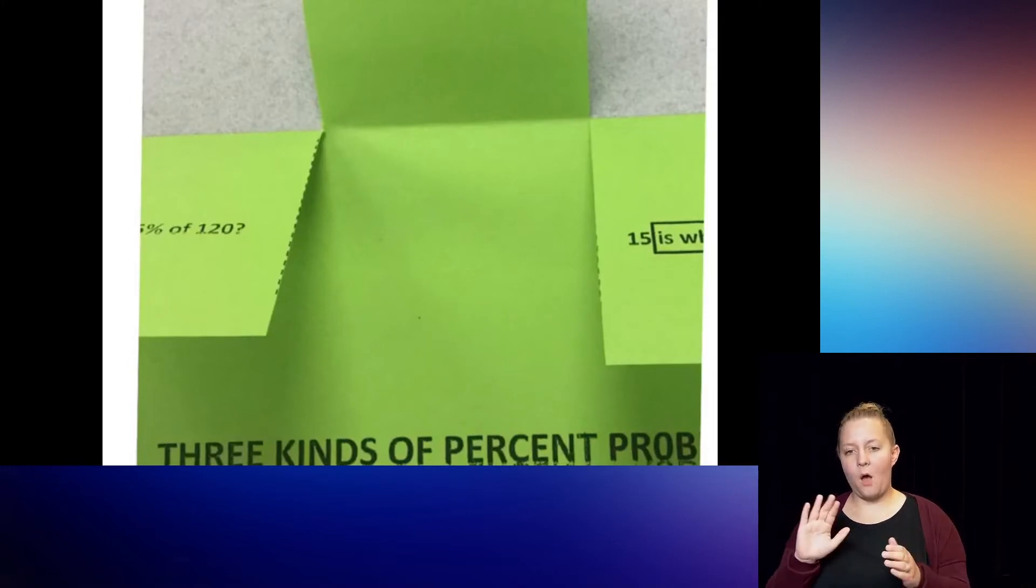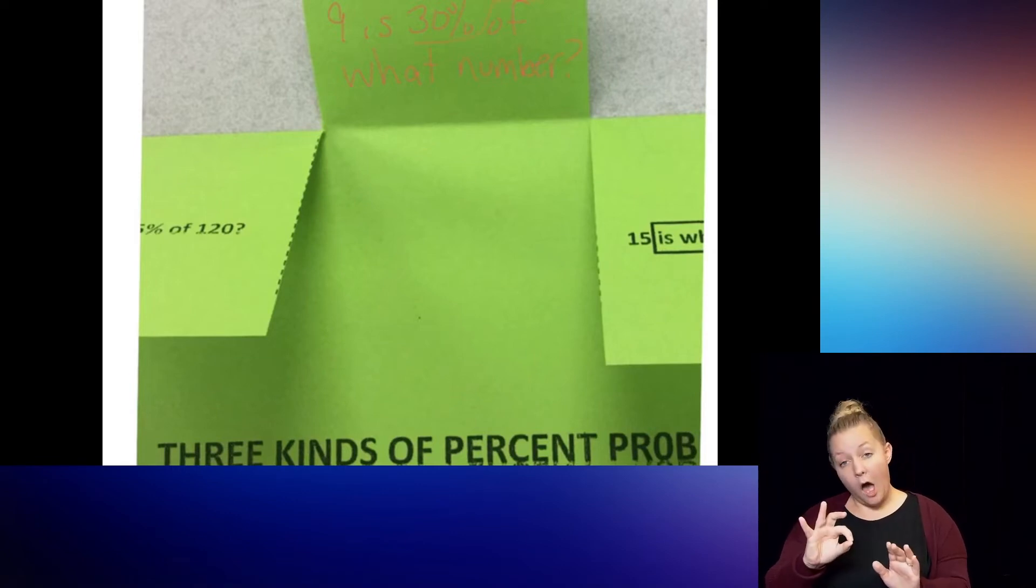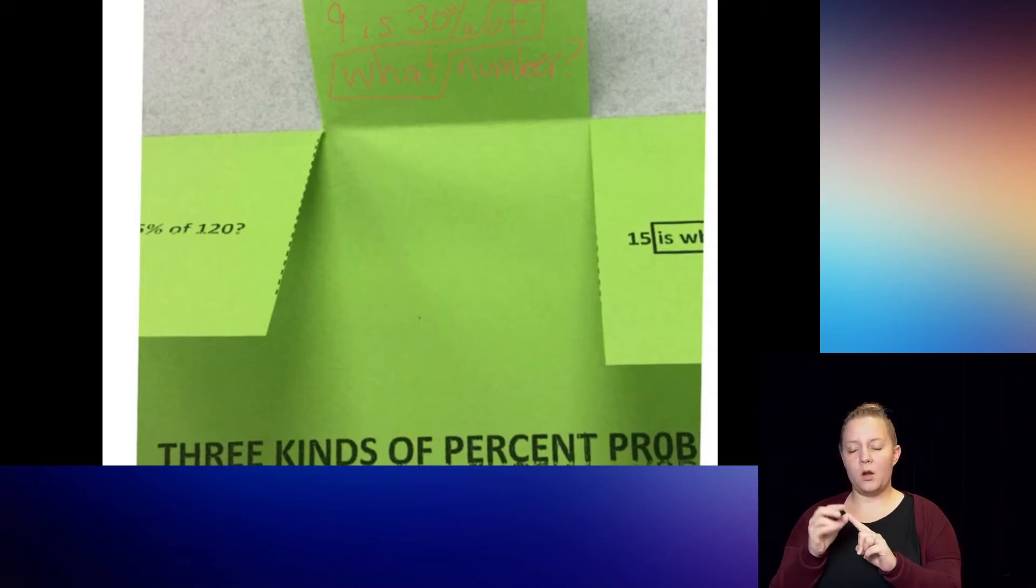Okay, now let's open the middle flap. This was the flap that said nine is 30% of what number? Now, it's not actually a complete sentence because it started with a number instead of a capital letter, but we will forgive that on the notes. And the of what? The word of goes with the word what. So I know that the whole is the section that I'm missing.